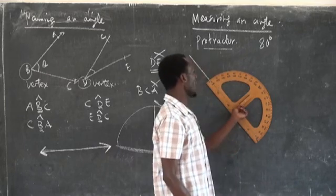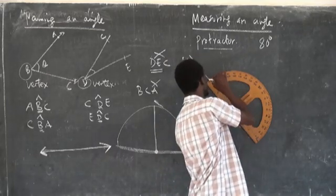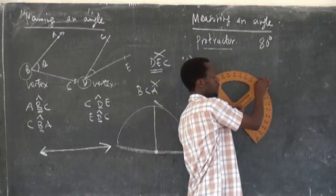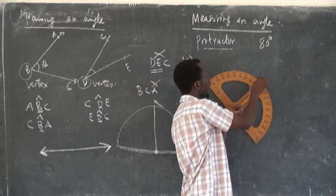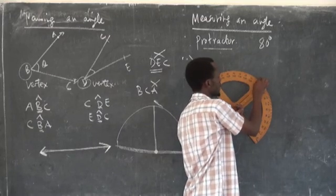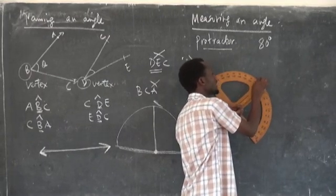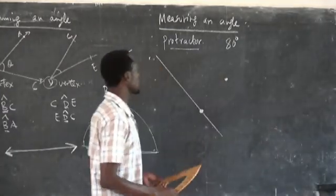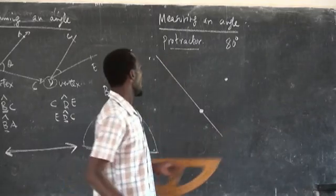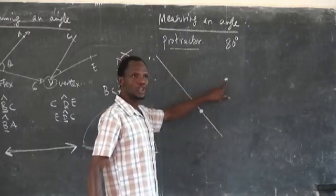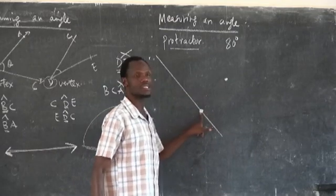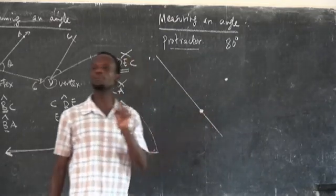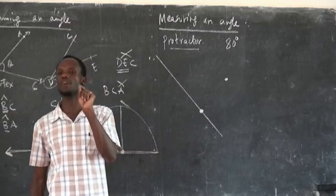I am looking for 80 degrees. Then 80 is somewhere here. From zero to 80 — you put your point there. Put your point to mark 80. This is the point. Then you turn to your ruler and join that point to the vertex point that you have chosen. That is very important — it is why it is very important for you to choose the vertex point.